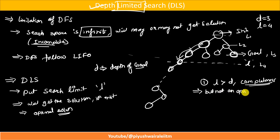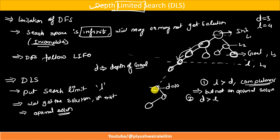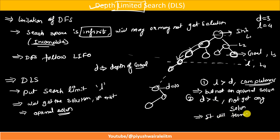Case two: D is greater than L. Suppose the goal state is at depth D equals 10 but we set the limit L equals 4. In this case the algorithm will never reach that goal node because we already set the limit. It will not get any solution and the algorithm will terminate — it explores all nodes within the limit, fails to find the goal, and terminates. So to summarize: if L is greater than D, it follows completeness but the solution is not optimal. If D is greater than L, we get no solution and the algorithm terminates.